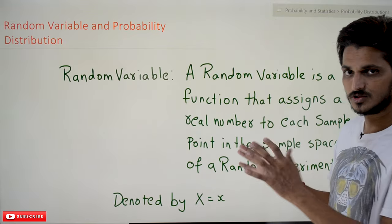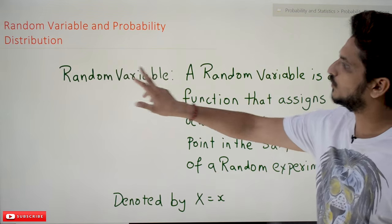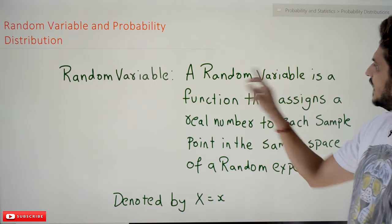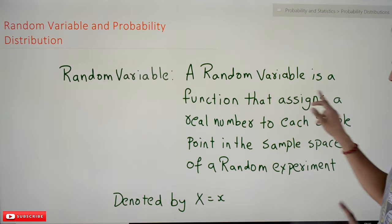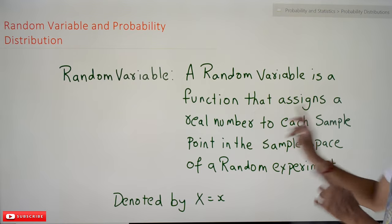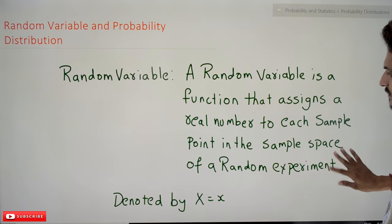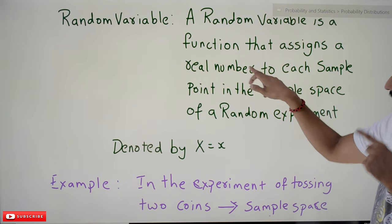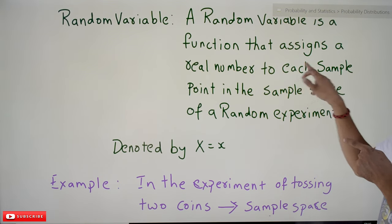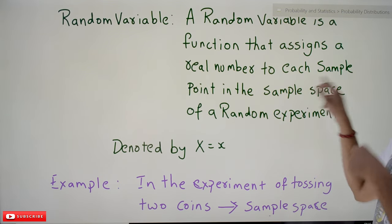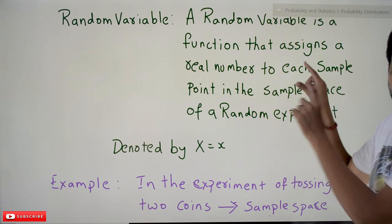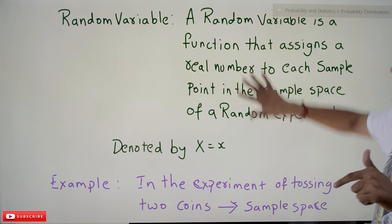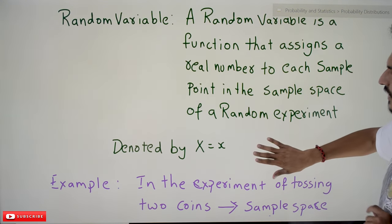Coming to today's class — because this is the first class on random variable and probability distributions, we are going very slow. First we are going to understand the definition of random variable. A random variable is a function that assigns a real number to each sample point in the sample space of the random experiment. It is going to assign a real number to each sample point in the sample space — remember this point.